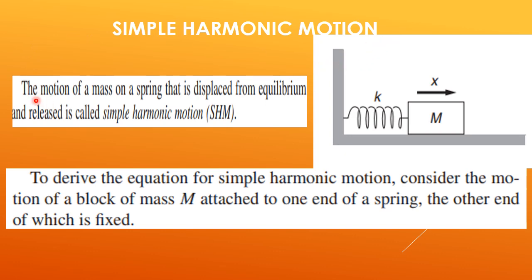Now, simple harmonic motion. The motion of a mass on a spring that is displaced from its equilibrium and released is called simple harmonic motion. We have to derive the equation for simple harmonic motion, considering a block of mass M attached to one end of a spring with the other end fixed. We need to find the equation of simple harmonic motion.